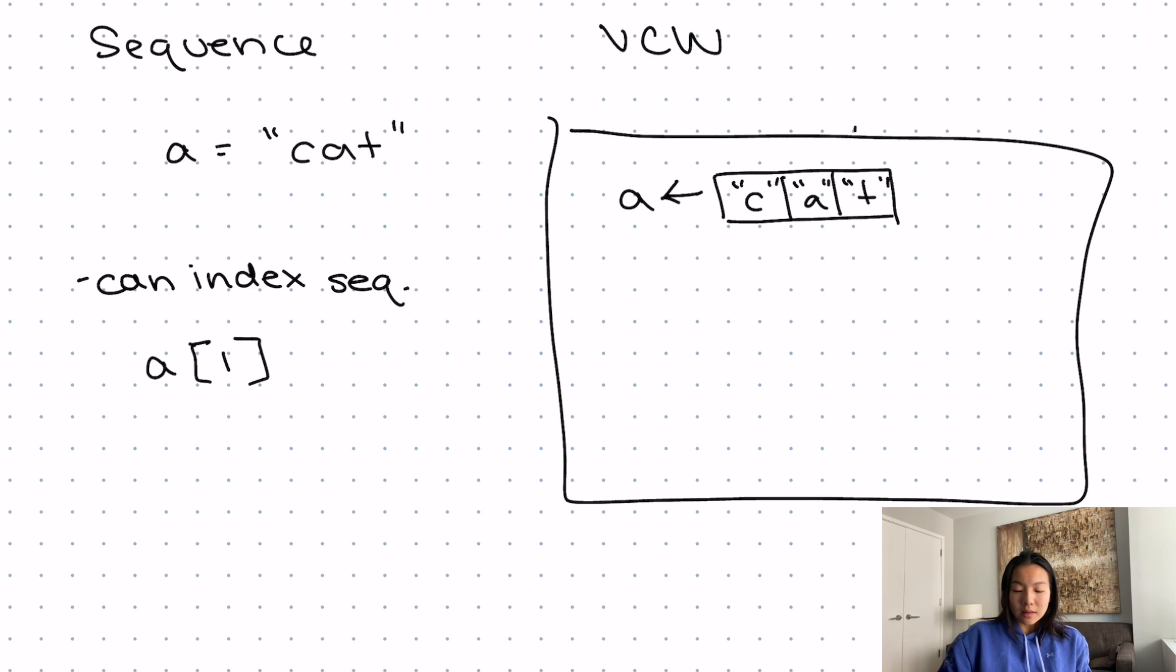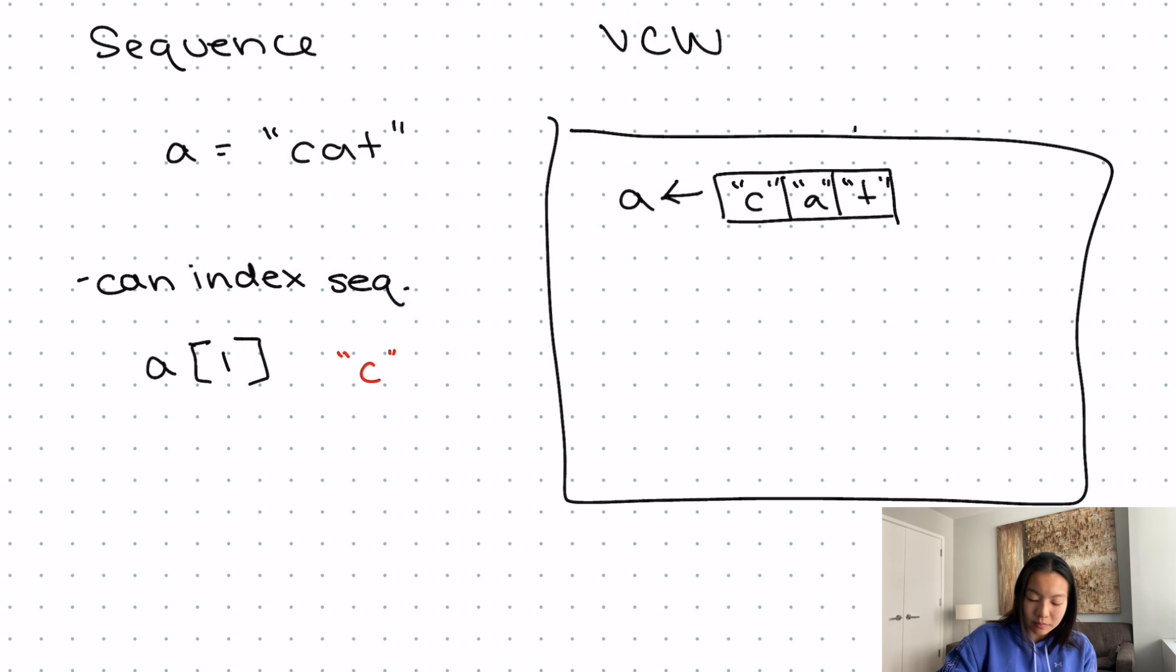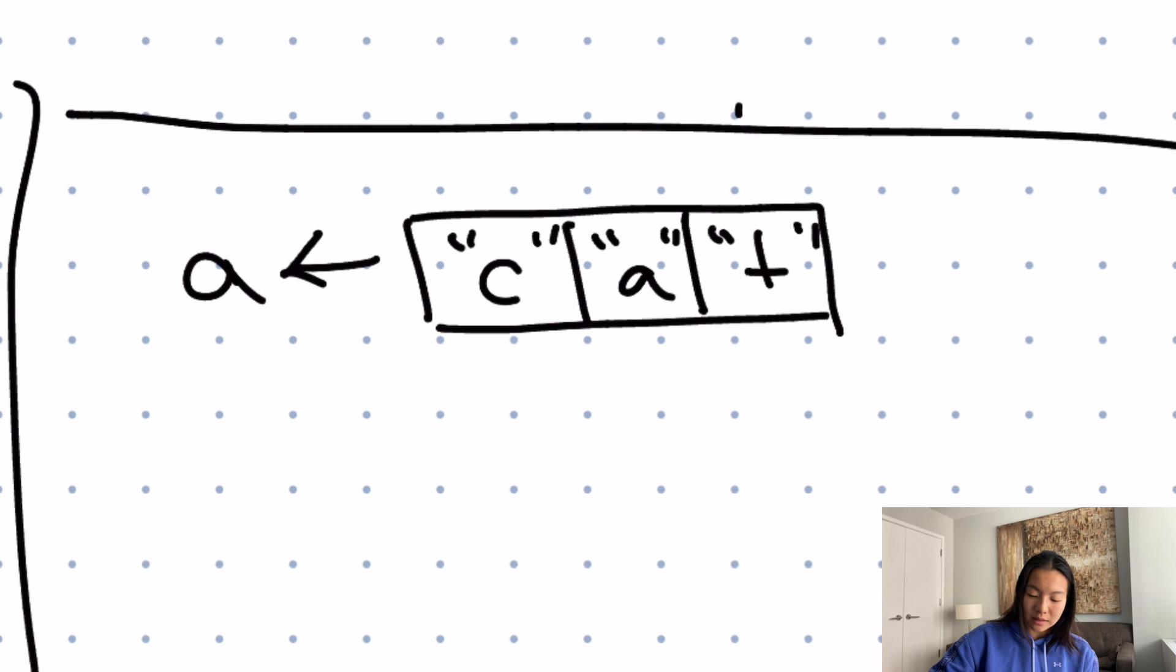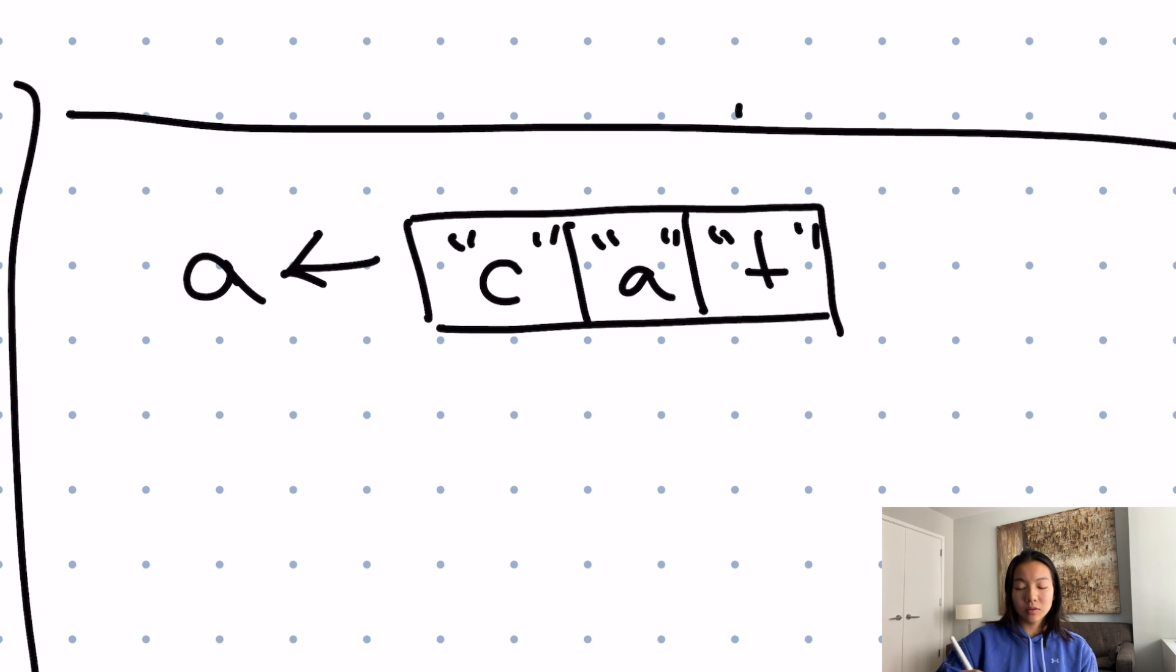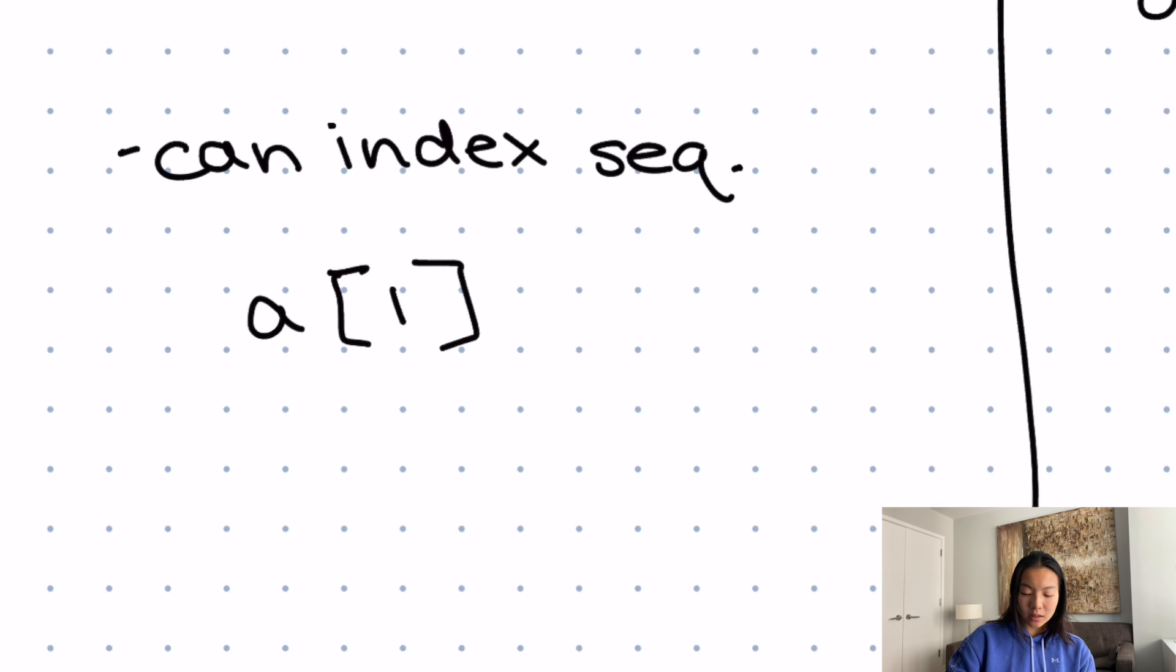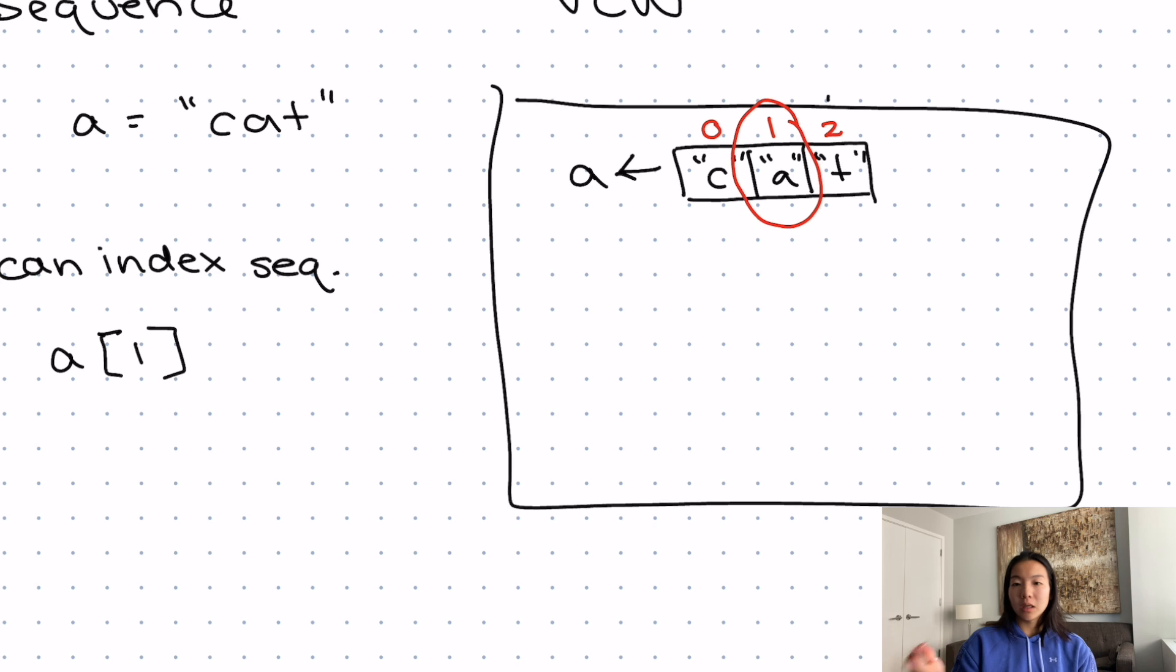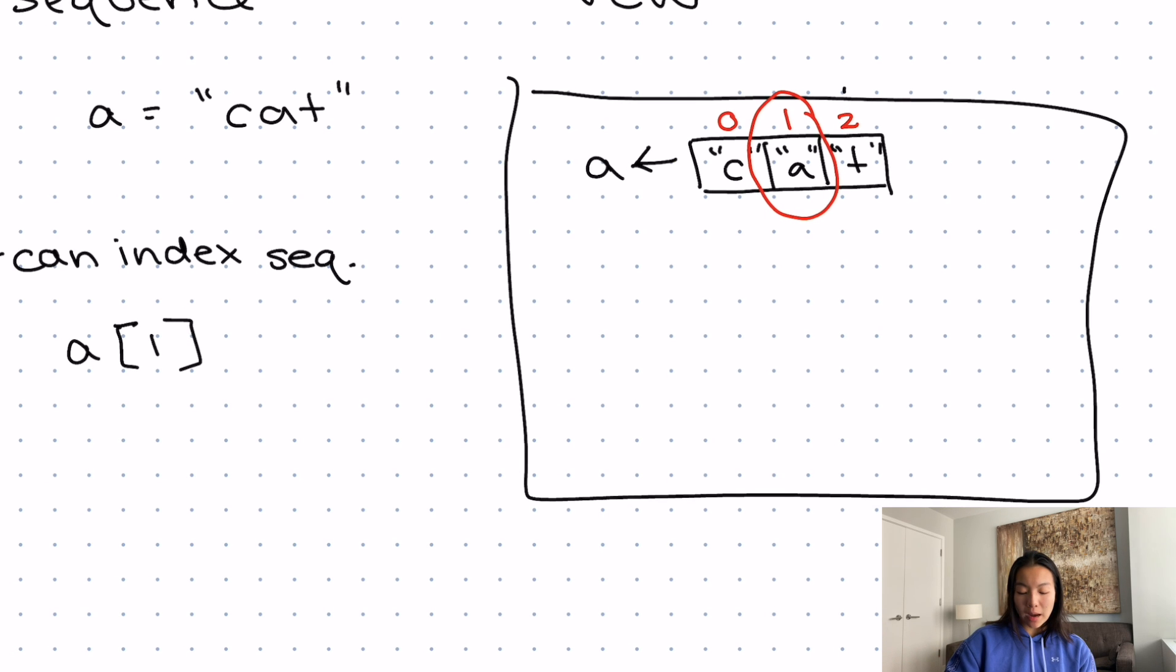You might think that this gives you back C because it's the first thing, but Python does this differently. Actually, the indices start at zero. So this here is actually zero, one, and two, which means that if I come here, a of one, I am taking the item at position index one, which happens to be a in this case.